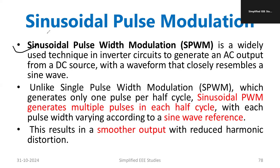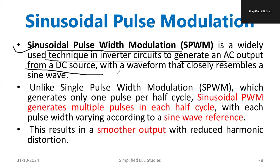Sinusoidal pulse width modulation is a widely used technique used in the inverter to generate AC output voltage from the DC source. The waveform produced is very close and similar to the sine wave, which is required for utility applications. Unlike single pulse width modulation, which generates only one pulse per half cycle,